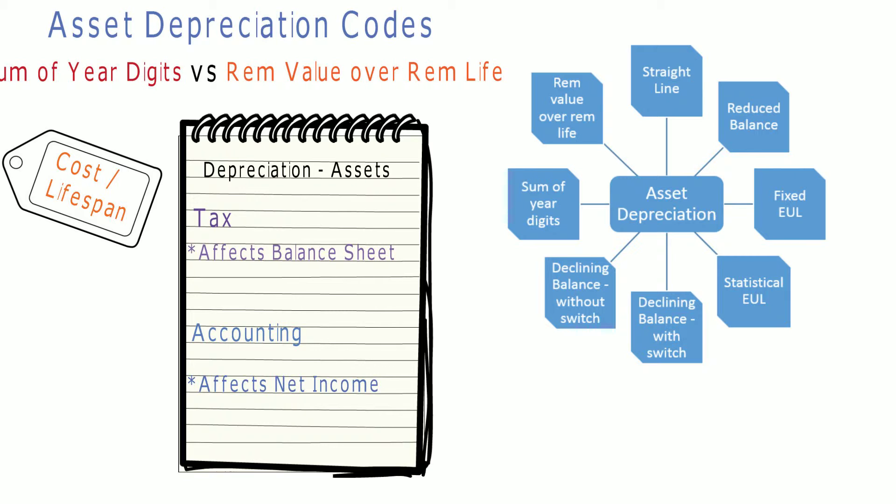CISPRO allows different depreciation types or methods to be applied to assets, such as straight line, reduced balance, fixed EUL, statistical EUL, declining balance with switch, declining balance without switch, sum of year digits, and remaining value over remaining life.